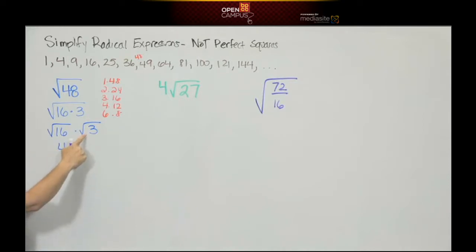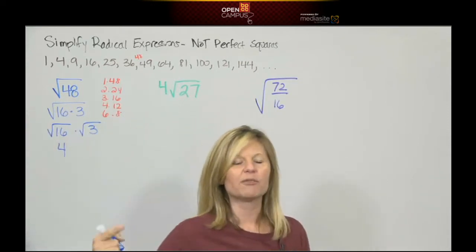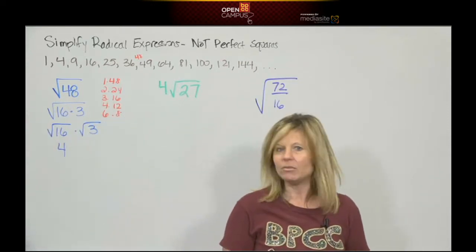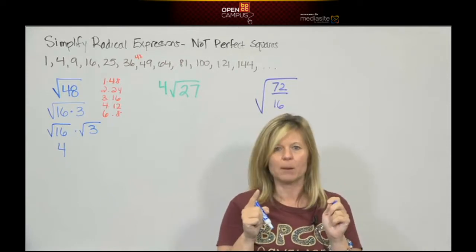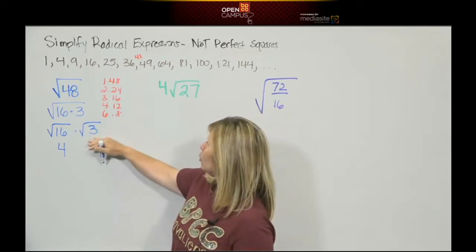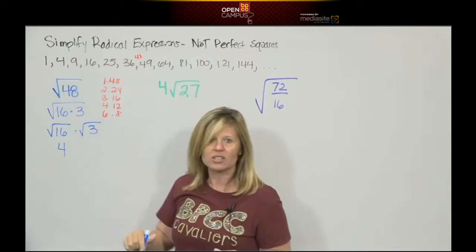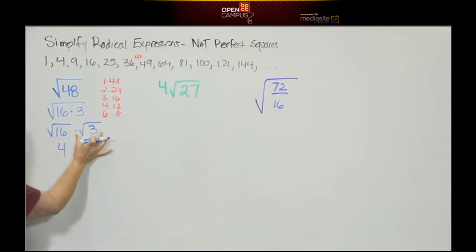Now the question is, can I square root 3? Is there a number times itself that makes 3? No. The only way to make 3 is 1 and 3 and that's not the same number. So we cannot square root 3. So because we can't perform this operation, the 3 stays inside the radical symbol. And simplified, the square root of 48 is 4 square roots 3.